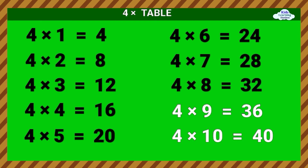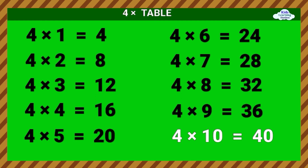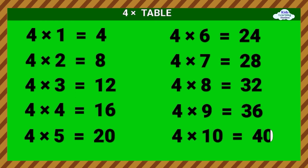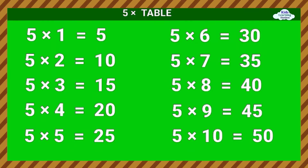4 times 9 equals 36. 4 times 10 equals 40. Five times table. 5 times 1 equals 5.